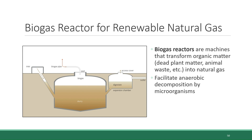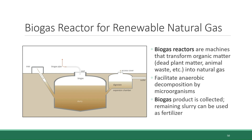Biogas reactors are an anaerobic chamber — a chamber lacking in oxygen. By placing a slurry of organic waste into the chamber and maintaining certain temperature conditions, the slurry breaks down through anaerobic decomposition by microorganisms, parallel to how fossil fuel natural gas is created. The natural gas emitted by the microorganisms is referred to as biogas, which is siphoned off and used in the same manner as conventional natural gas. The remaining slurry, now called digestate, can be piped out and used as fertilizer.